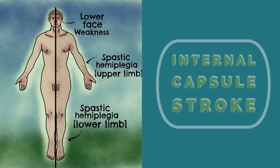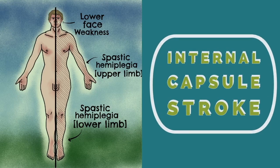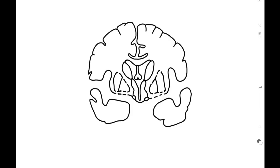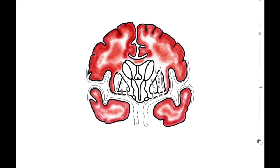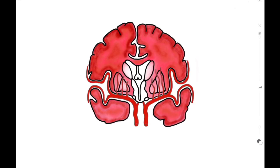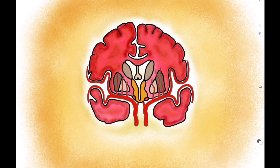Hello and welcome to this Soton Brain Hub video on internal capsule stroke. We're going to look at the brain through a coronal section. This will allow us to visualize the internal capsule, the structures surrounding it, and the arterial vasculature that supplies this particular area of the cortex.